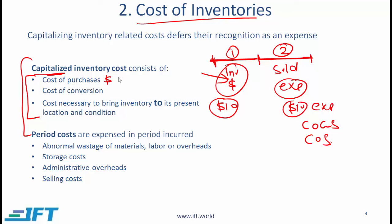So if raw material for a given item is worth $3, that is capitalized. The cost of conversion — converting the raw material into the finished product, let's say that cost is $4 — that also needs to be capitalized. The cost of conversion can have several components: direct labor, which is the labor directly involved in converting raw material into the finished good; direct overhead, which are factory-related expenses directly connected to inventory; and raw material, which we have already discussed.